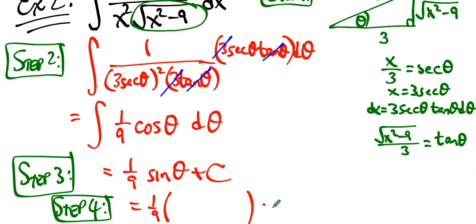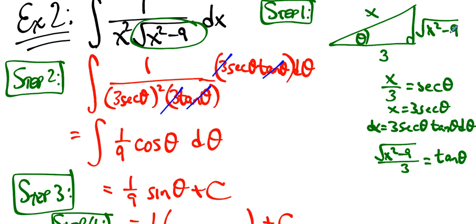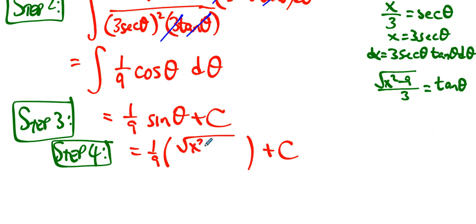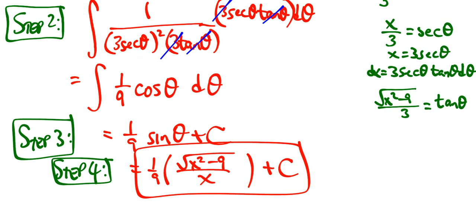So then step four says you substitute back. Which means we have to know what sine theta is. Well, what's sine theta? Sine theta is the opposite side over the hypotenuse. And we're done. That's the whole thing. That's the whole shooting match.